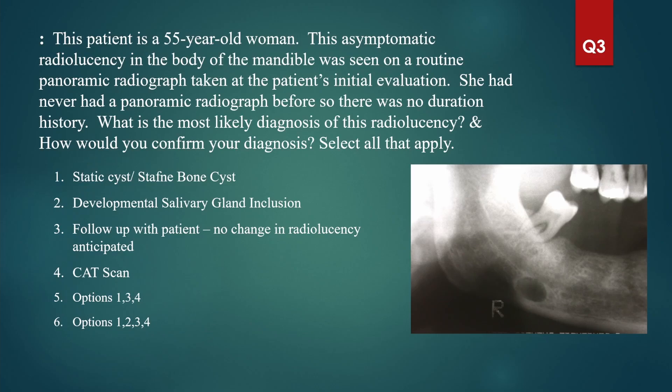This patient is a 55-year-old woman. An asymptomatic radiolucency in the body of the mandible was seen on a routine panoramic radiograph taken at the patient's initial evaluation. She had never had a panoramic radiograph before, so there was no duration history. What is the most likely diagnosis and how would you confirm it? Select all that apply.